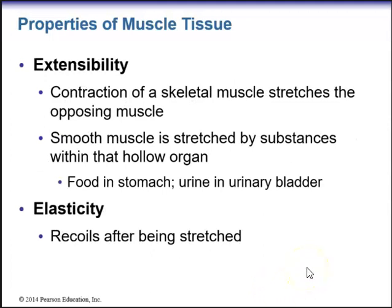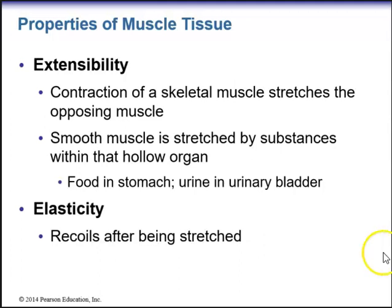Extensibility — contraction of a skeletal muscle stretches the opposing muscle. We also know that smooth muscle is stretched by substances within the hollow organ. For example, when we have food in our stomach, this stretches the smooth muscle in the stomach, as well as urine in the urinary bladder. The last property is elasticity — muscle has the ability to recoil after being stretched.